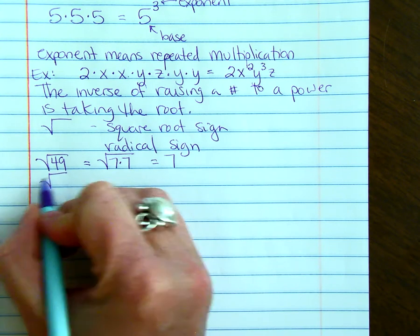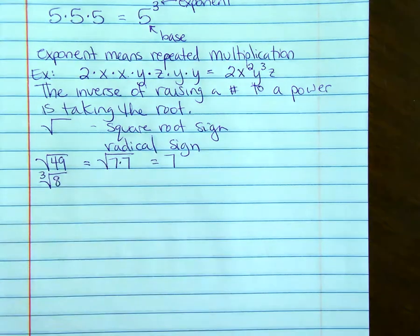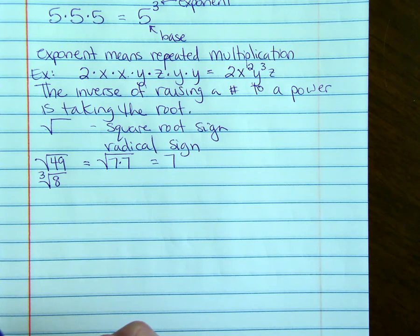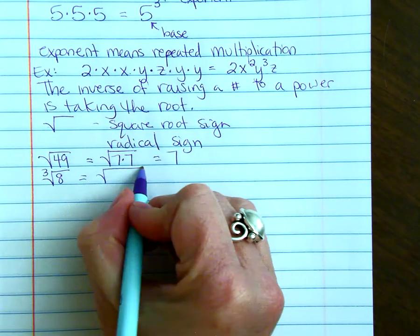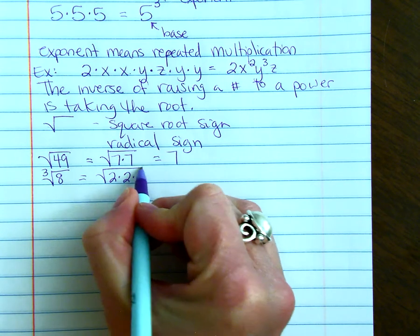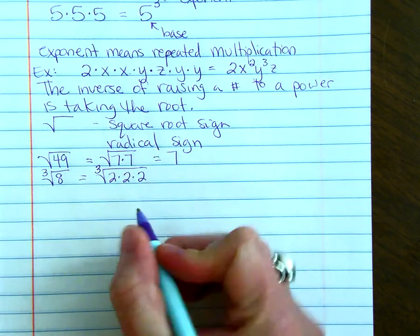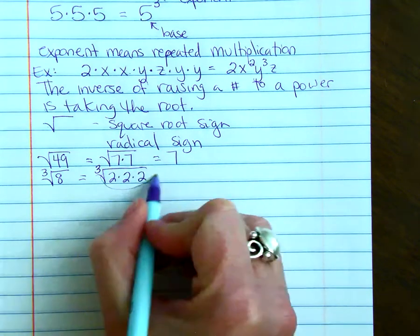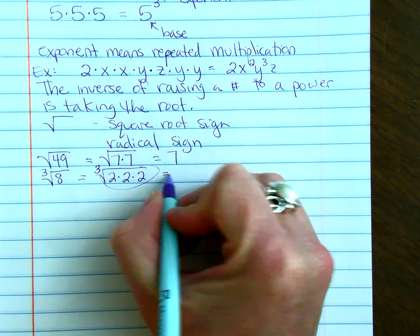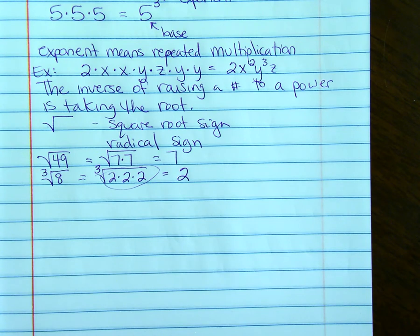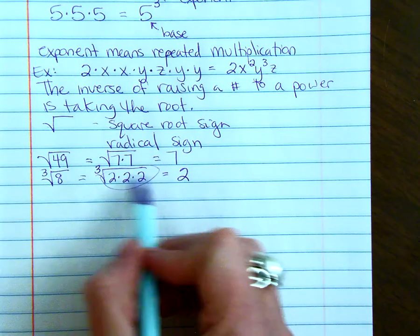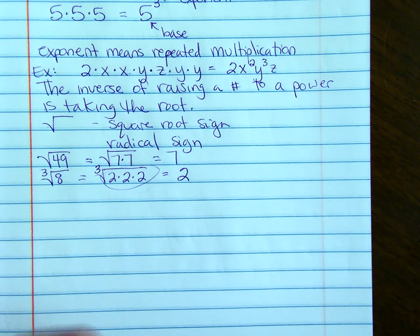For the cube root of 8, the little 3 is called the index. We're trying to find one number repeated 3 times that equals 8. Looking at the prime factorization, 8 = 2·2·2. We're looking for a group of 3. Since there are three 2's, the cube root of 8 is 2.